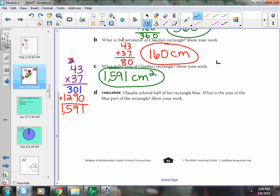So I'm going to break apart 43 into a 40 and a 3, and I'm going to break apart 37 into a 30 and a 7.